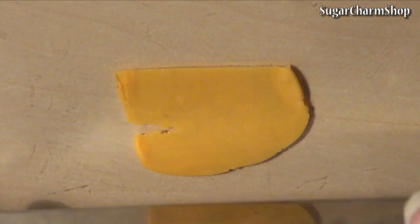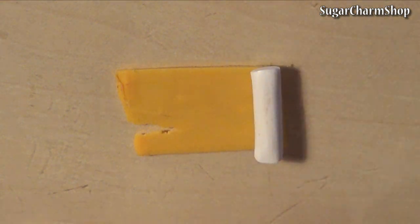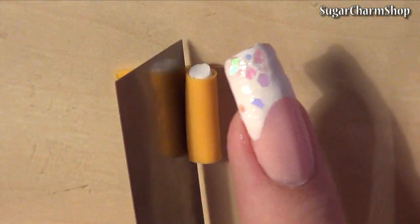Another way of making these is to wrap a thin layer of the color you want on the outside around the white clay, close one end and begin shaping it.